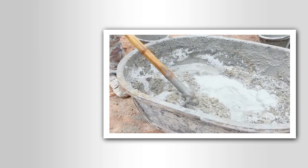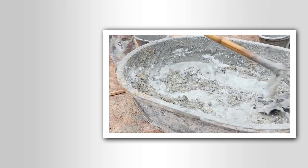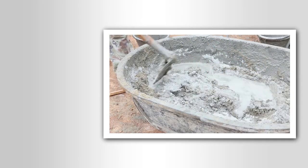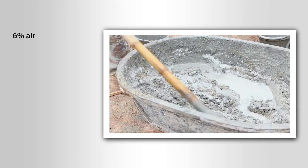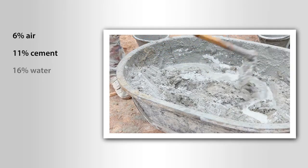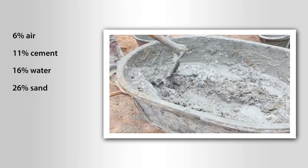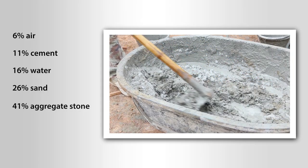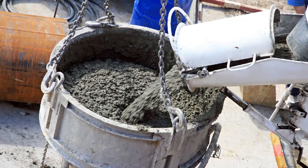Let's mix up a batch by assembling the following items: 6% air, 11% cement, 16% water, 26% sand, and 41% aggregate stone. Agitate these ingredients in a mixer and you have concrete.